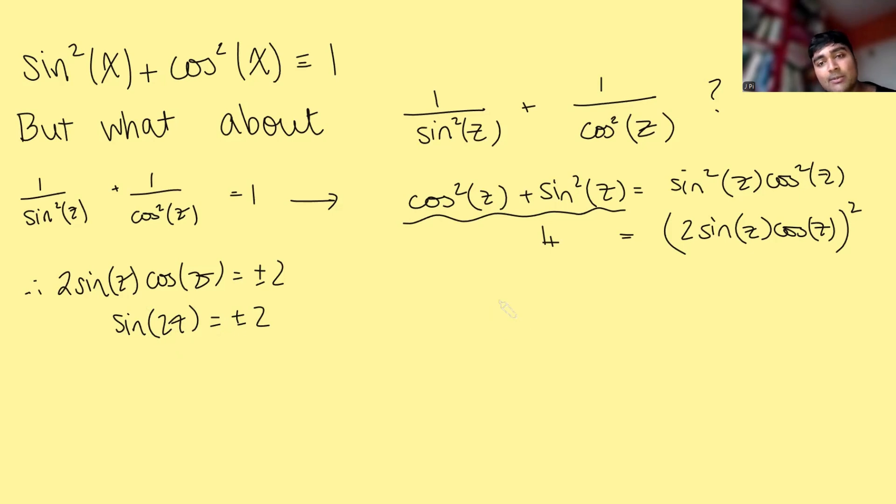We're going to use our friend Euler to help us. So e to the i theta is cos theta plus i sine theta. This is due to Euler. This is Euler's formula. What I'm going to do is, in this, replace theta with minus theta. So this becomes e to the minus i theta. And cos of theta would be cos of minus theta, and then plus i sine of minus theta.